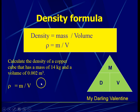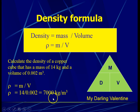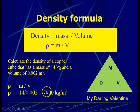Writing down the formula and substituting the values: mass is 14 kilogram and volume is 0.002 meter cube. Using a calculator, the answer is 7,000 kilogram per meter cube. To express the density of copper in gram per cm cube, recall that 1,000 kg/m³ equals 1 g/cm³, so divide 7,000 by 1,000, giving us 7 grams per cm cube.